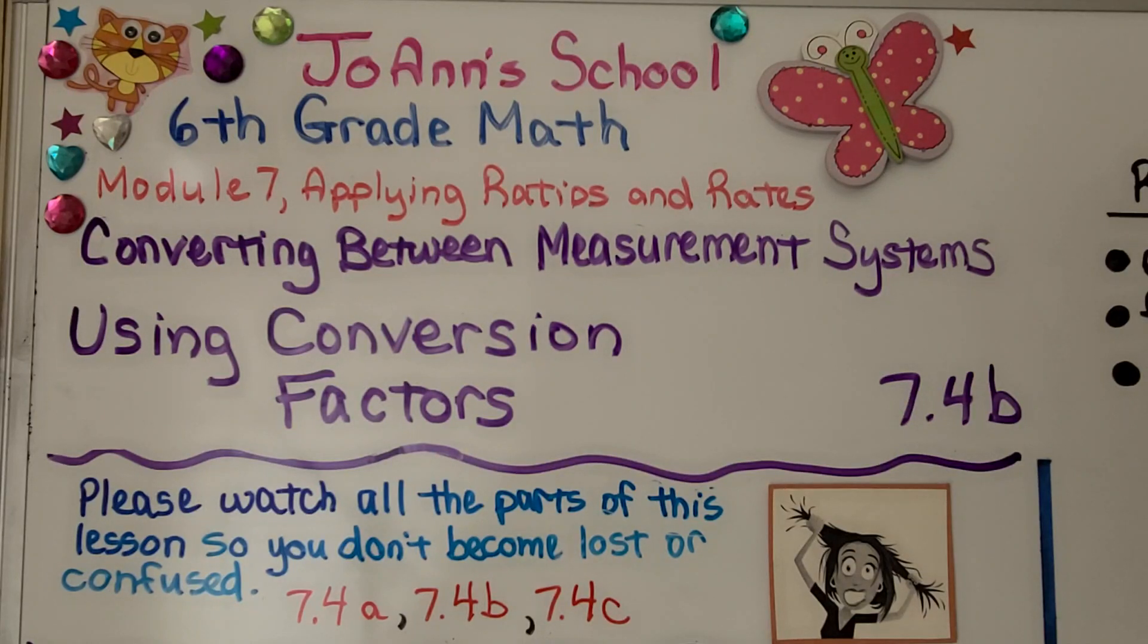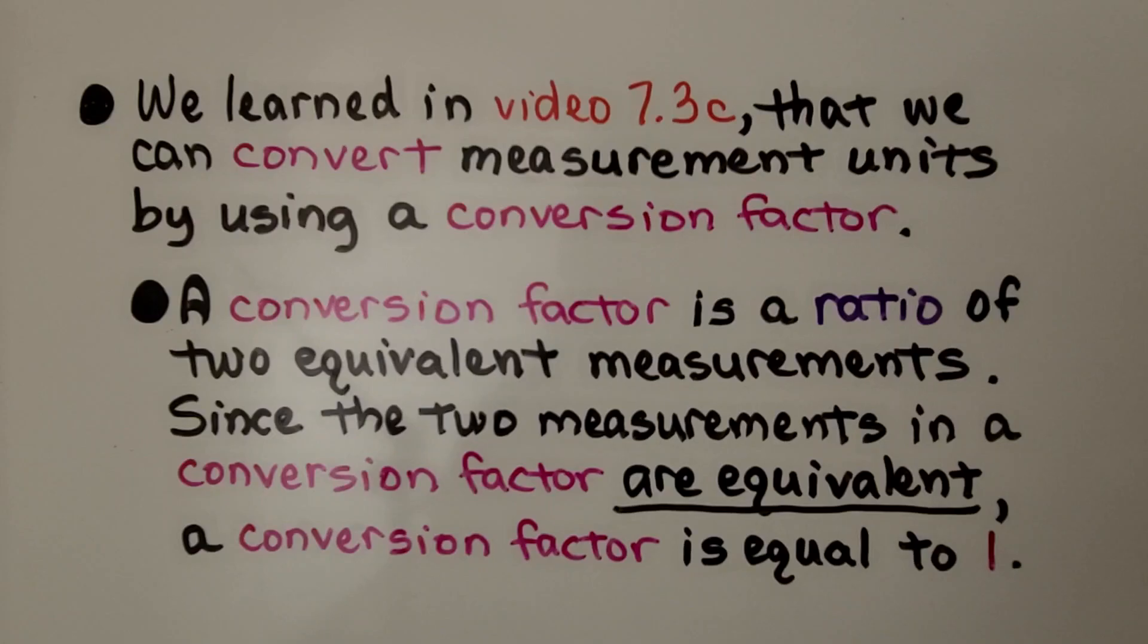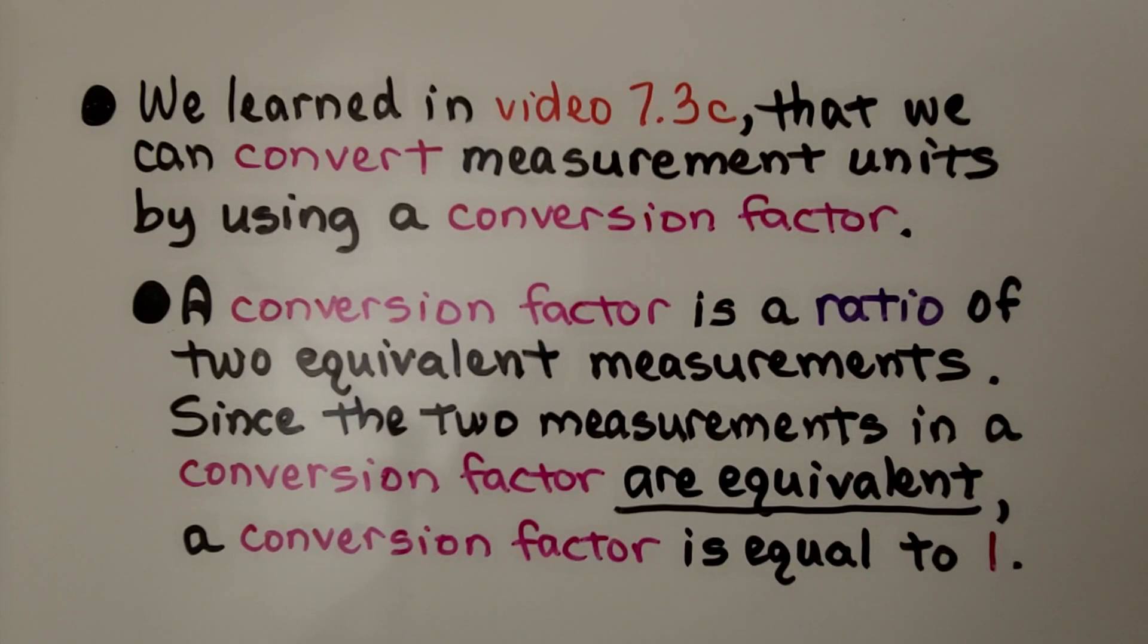Lesson 7.4b: Using Conversion Factors to Convert Between Measurement Systems. We learned in video 7.3c that we can convert measurement units by using a conversion factor. A conversion factor is a ratio of two equivalent measurements. Since the two measurements in a conversion factor are equivalent, a conversion factor is equal to 1.